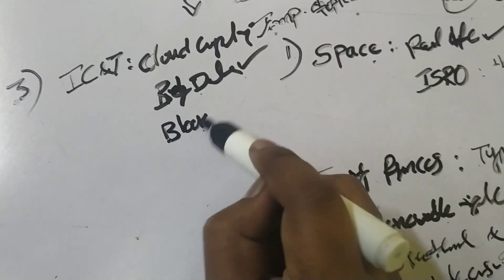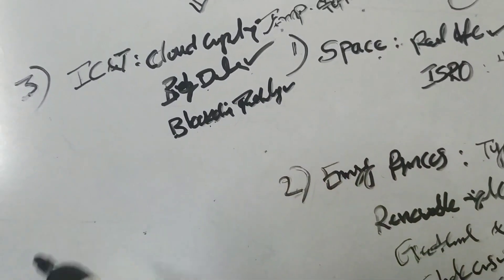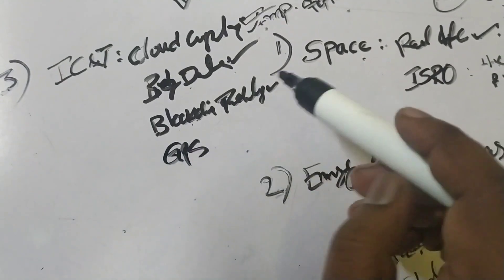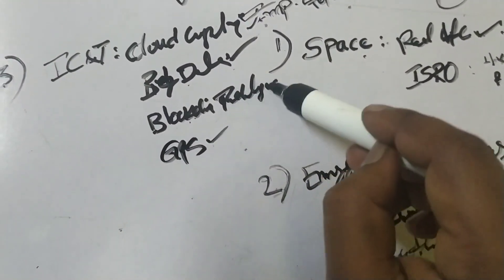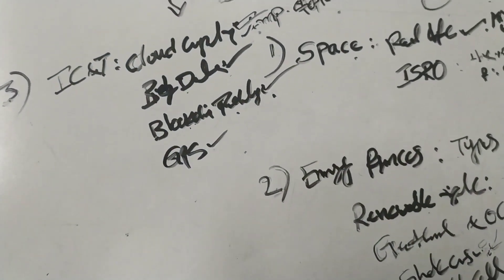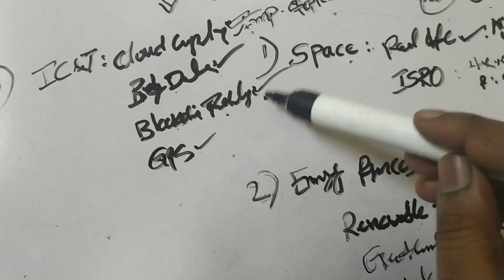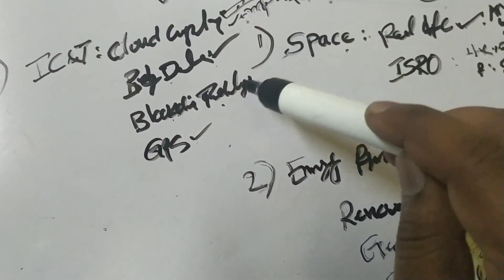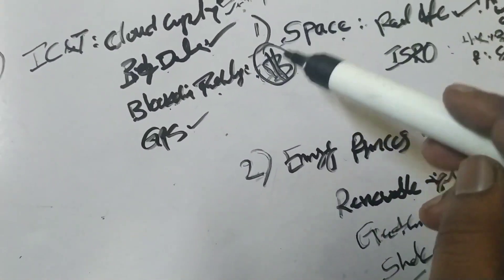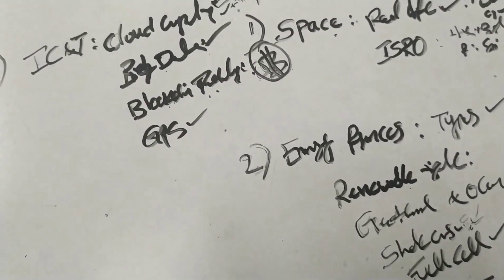In 2010, blockchain technology became important. Blockchain is related to cryptocurrencies like Bitcoin. Big data and cloud computing are connected to blockchain. Blockchain can be used for roads, power construction, and rental applications beyond just cryptocurrency.